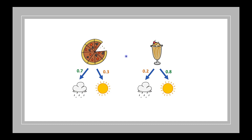DK has calculated probabilities and concluded: when Katie asks for pizza, there are 70% chances that it's a rainy day, and the remaining 30% chances that it could be a hot day. And when he asks for ice cream, there are 80% chances that it is a hot day, and 20% chances that it's a rainy day.